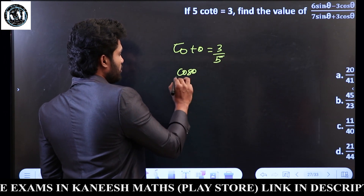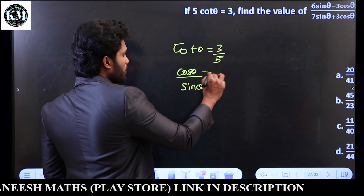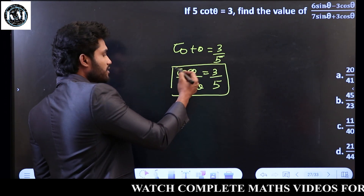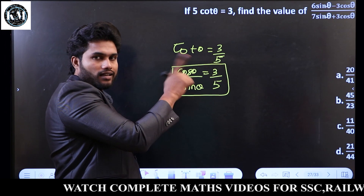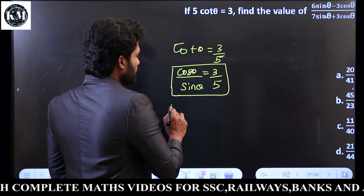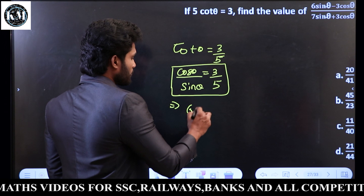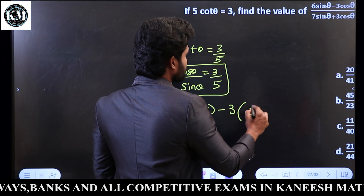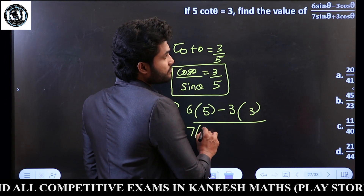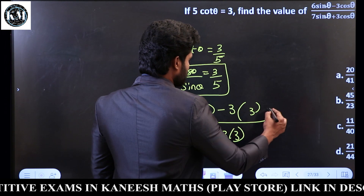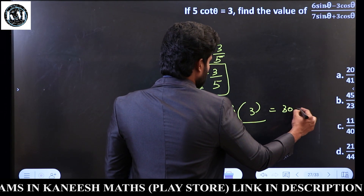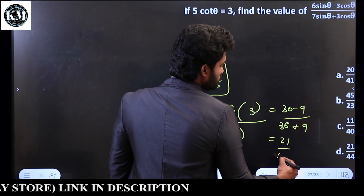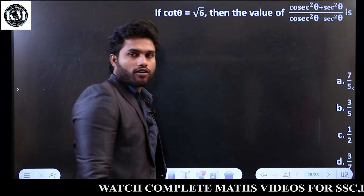Cot θ is cos θ by sin θ. So cos θ by sin θ, because tan is the inverse — cos by sin. If we solve, sin θ equals 5, we write and substitute: 6 sin θ (= 5) minus 3 cos θ (= 3) divided by sin θ (= 5) plus 3. The answer is 21 by 44.